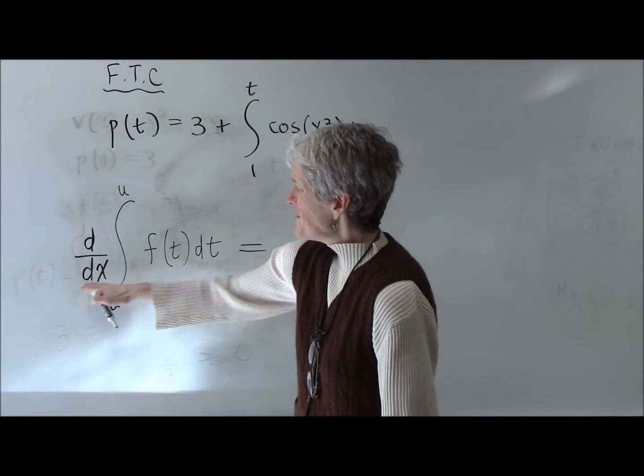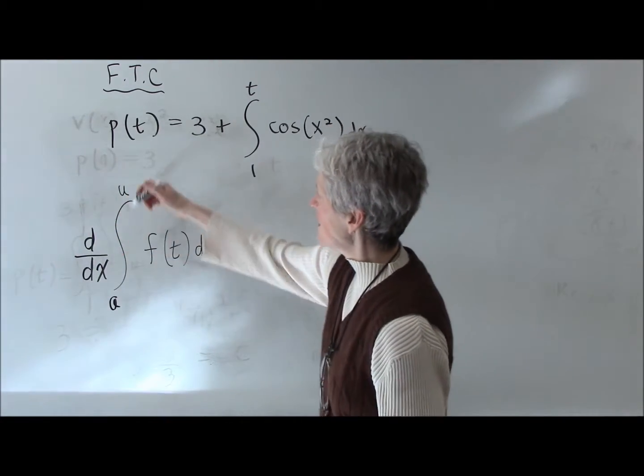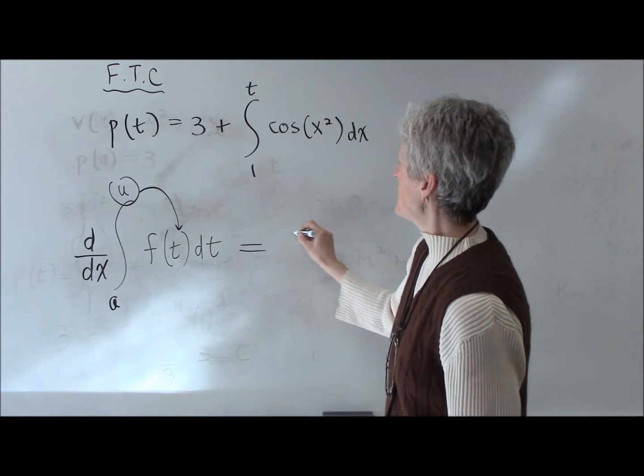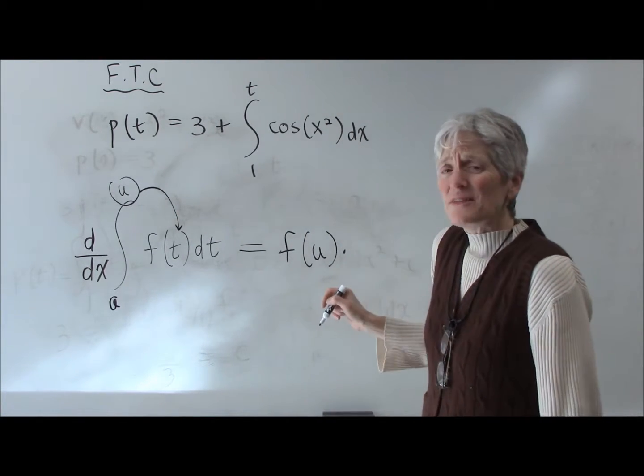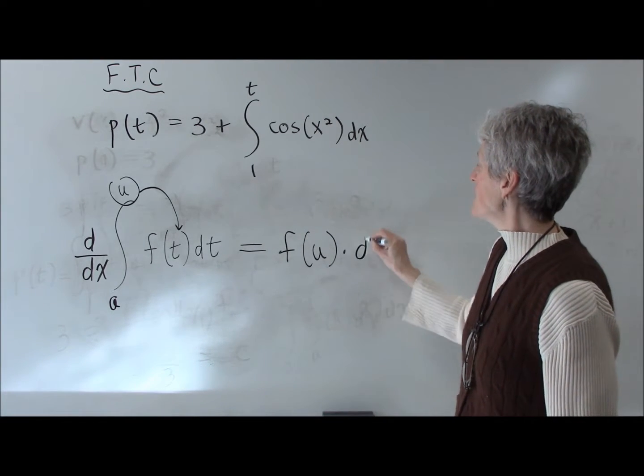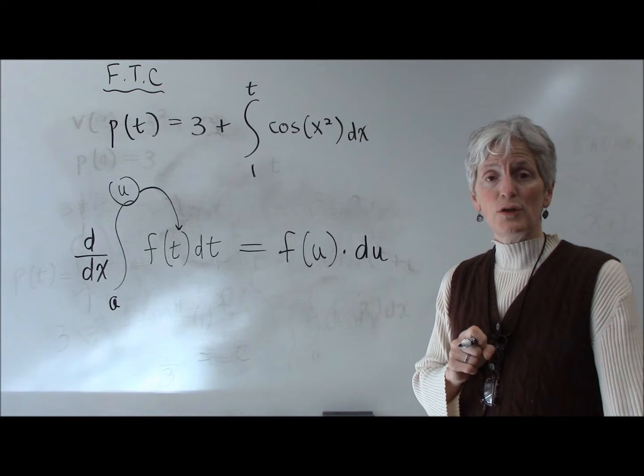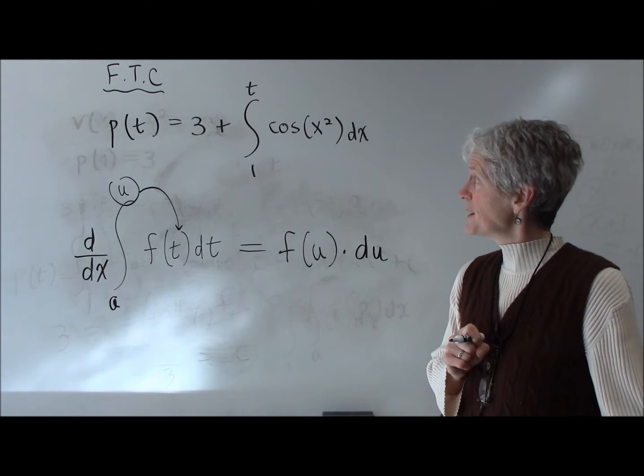The derivative of an integral, well, they're inverses of each other, so those undo each other. And that becomes f of u times, and this is the chain rule, I'm taking the derivative, so I have to do the chain rule, times the derivative of u. Is this making some sense?